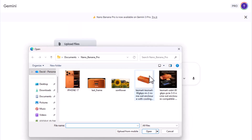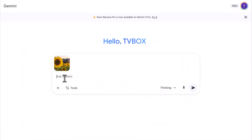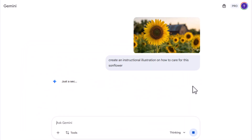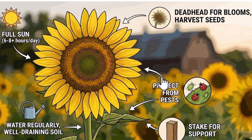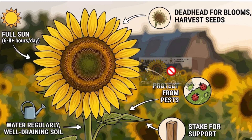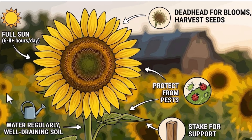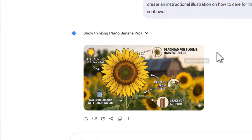Let's try something amazing. I'm going to upload a picture of a sunflower and ask Nano Banana or Gemini to create an instructional illustration on how to take care of this flower. And as you can see, it did create that illustration — covering full sun six to eight hours a day, water regularly, well-draining soil, stake for support, and protect from pests. Trying to do this in Photoshop probably would have taken 20 to 30 minutes, but it only took us seconds.